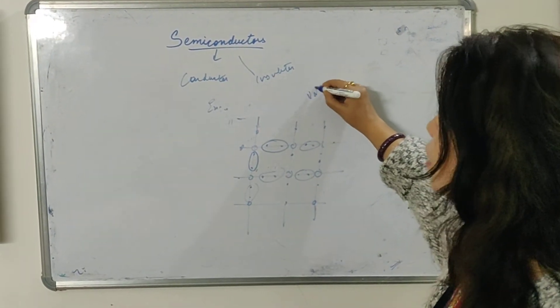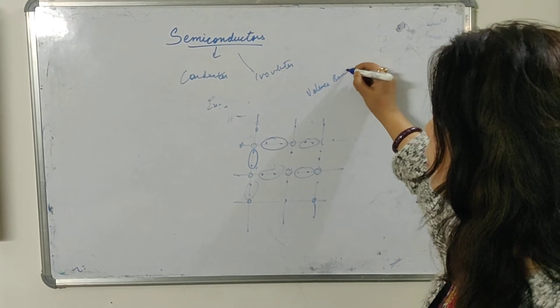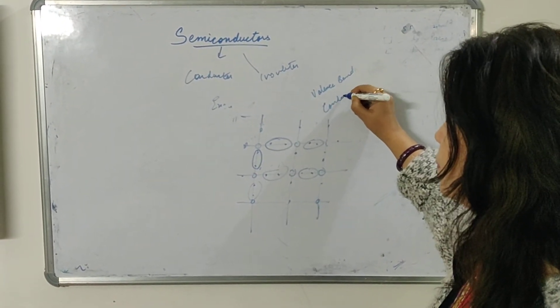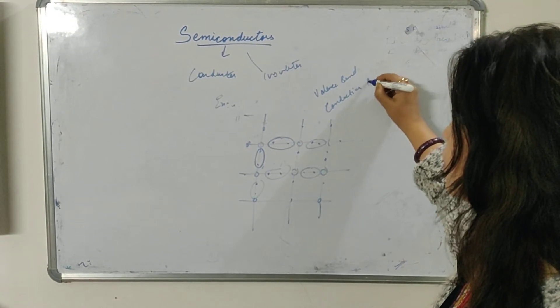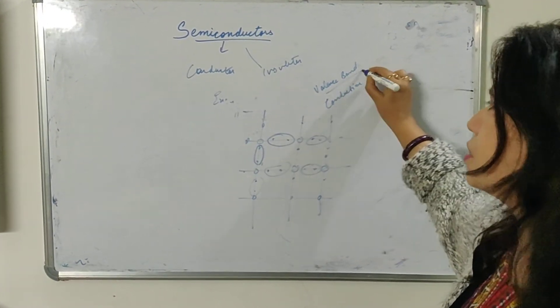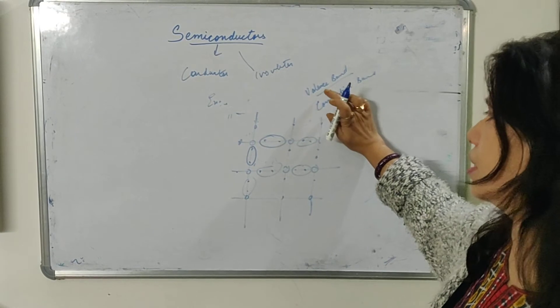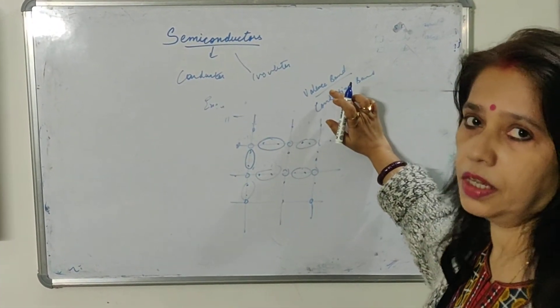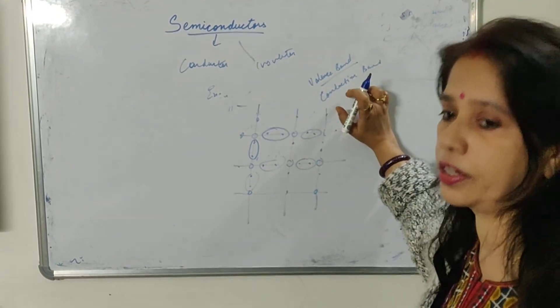What I want to say is that in the lattice structure, when we are making the lattice, there are actually 2 types of bond. One is called valence bond and the other is called your conduction band. Now in the valence band, as the name signifies, they are responsible for sharing. That means they are responsible for valency. They are not responsible for conduction.